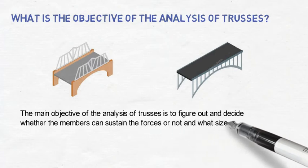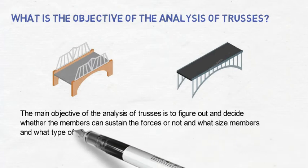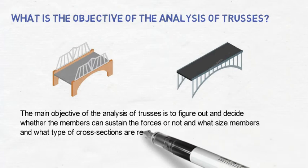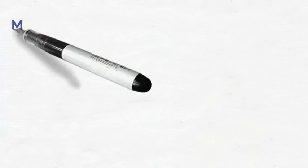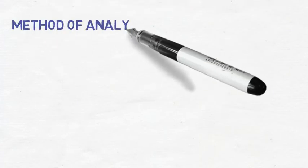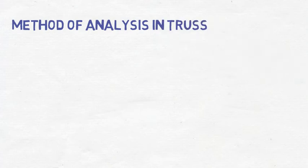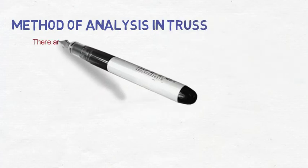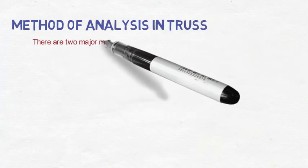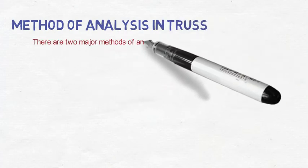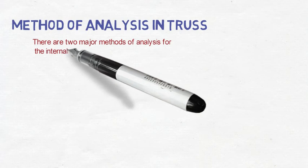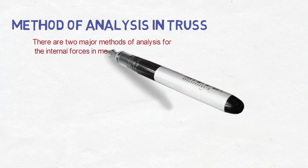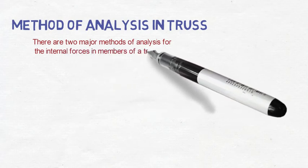In what size members and what type of cross-sections are required? There are two major methods of analysis for finding the internal forces in members of a truss.